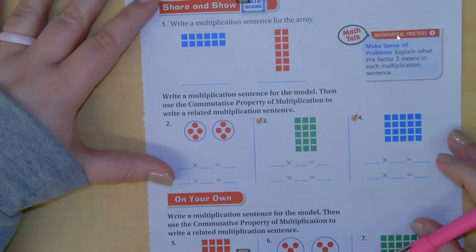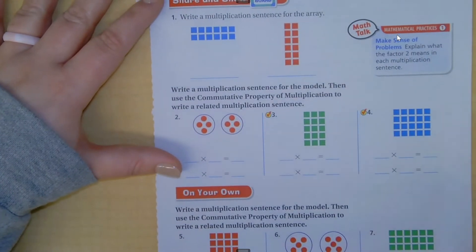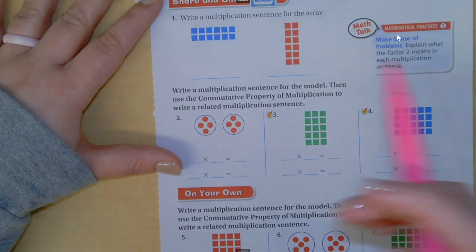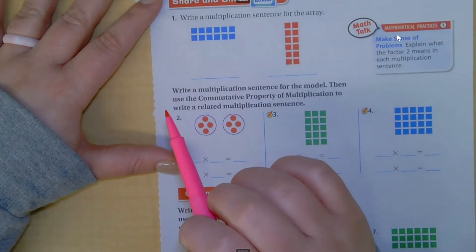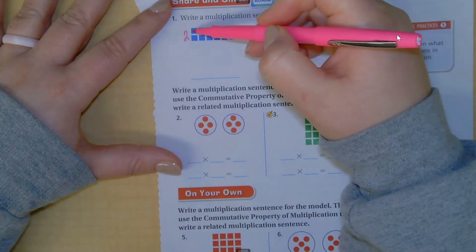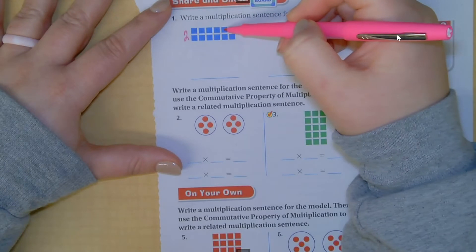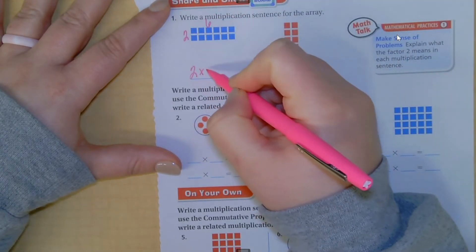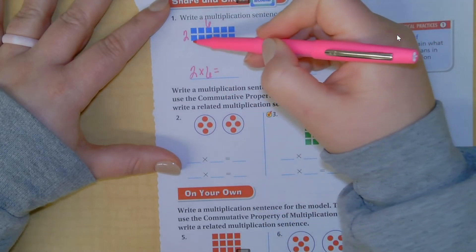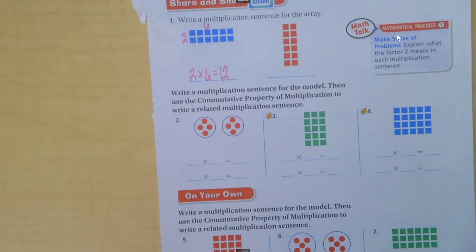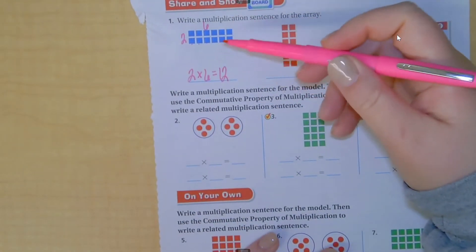Grab page 173 — let's practice some more. It's going to be very important that you learn to read your directions carefully. Write a multiplication sentence for the array. I have two rows of six in each row. So two rows of six equals twelve. There's my multiplication sentence: two times six equals twelve.